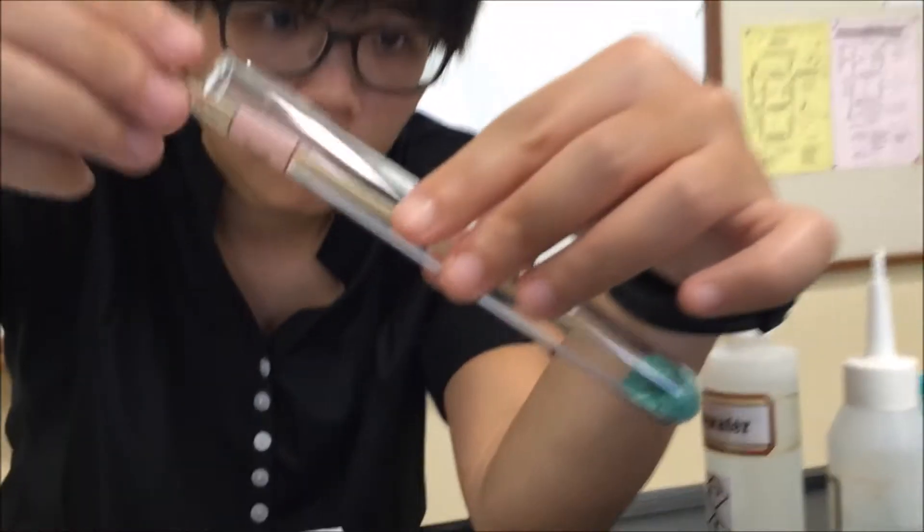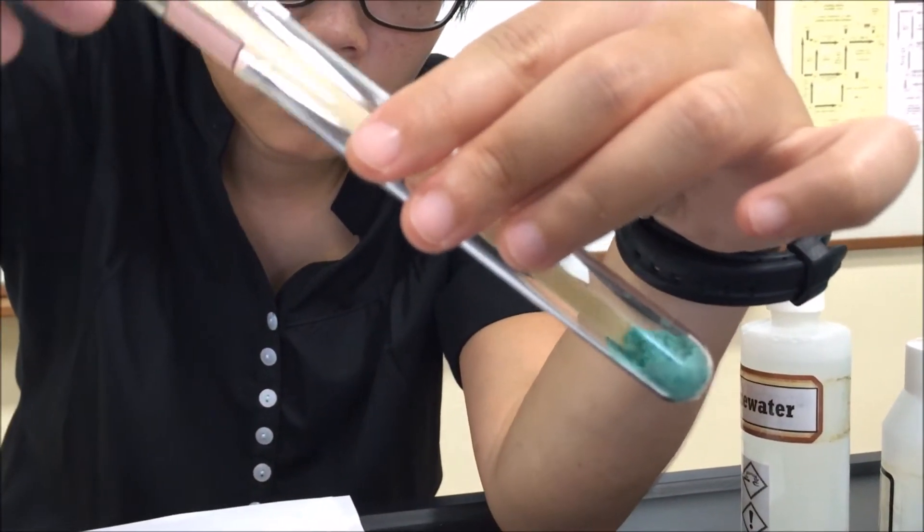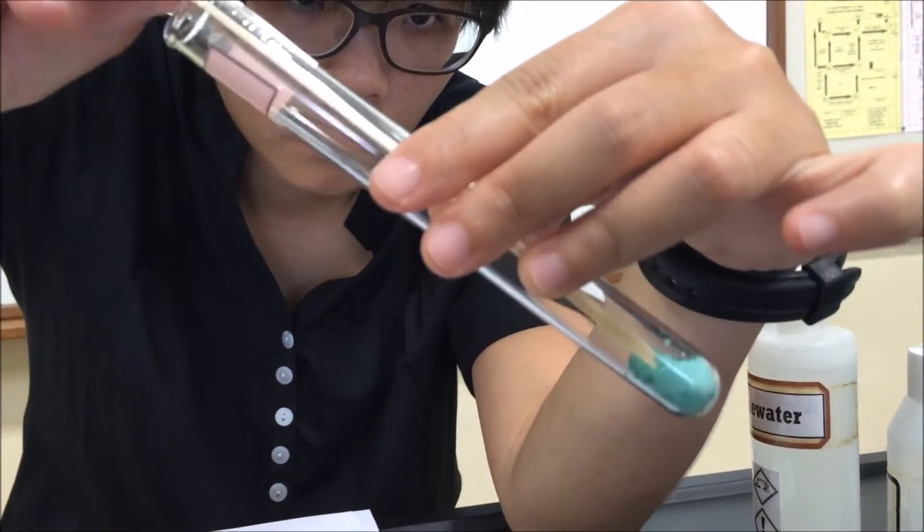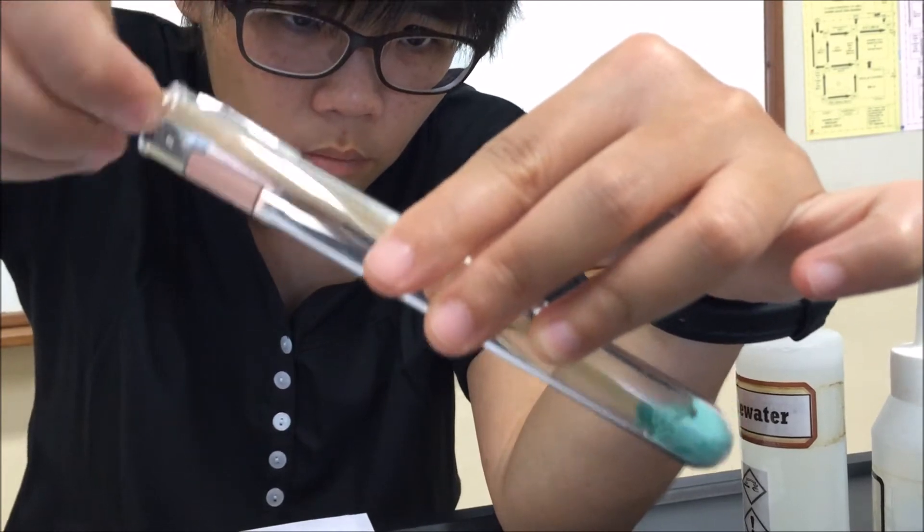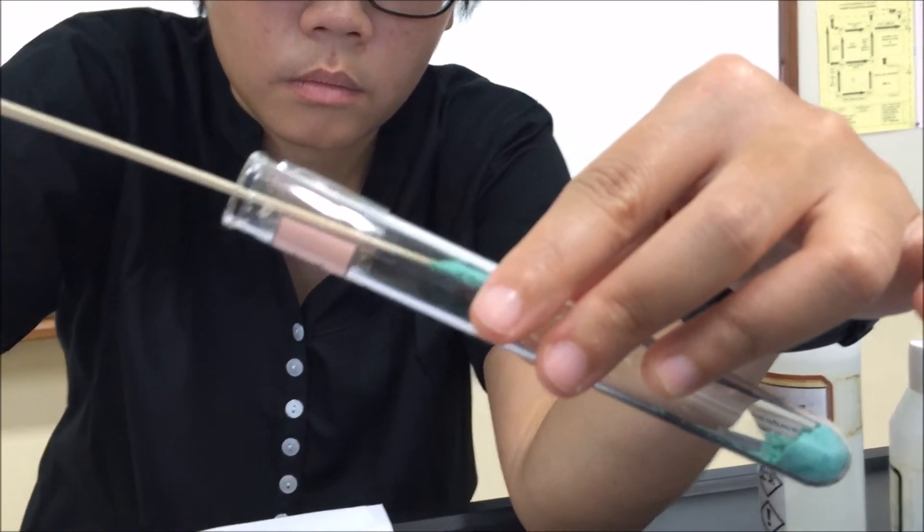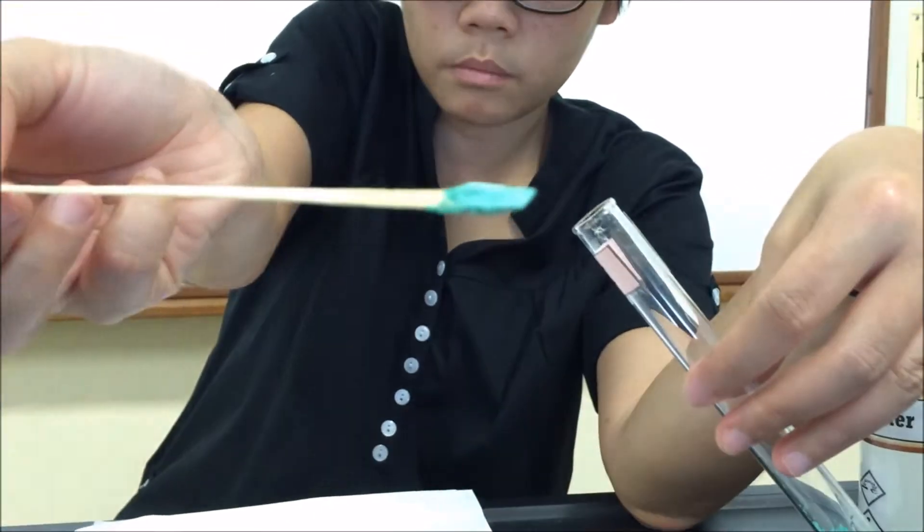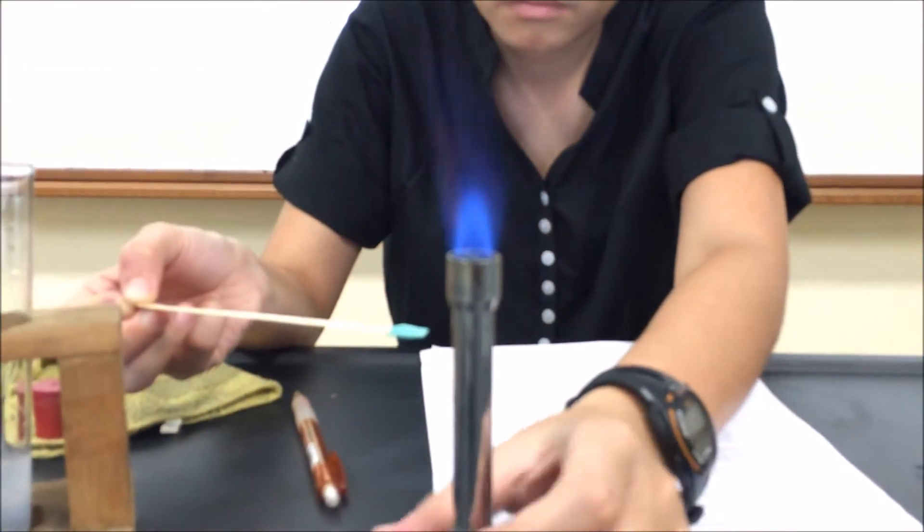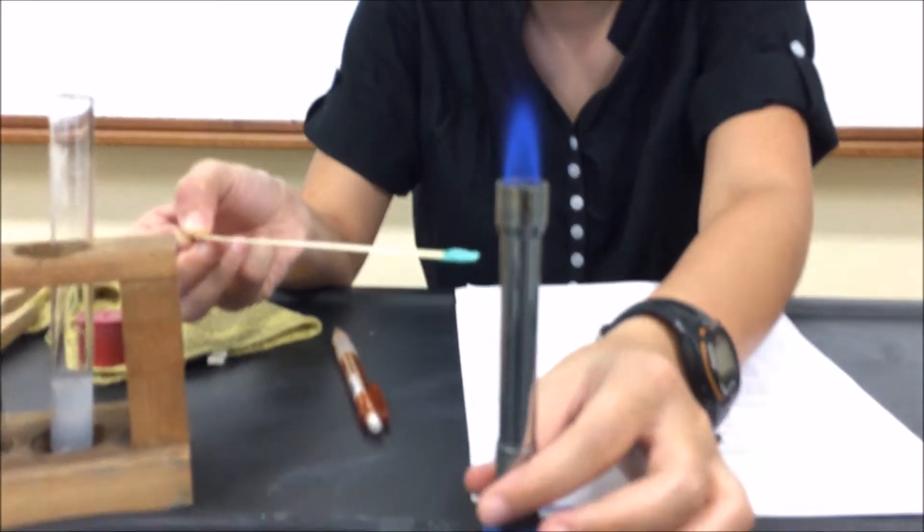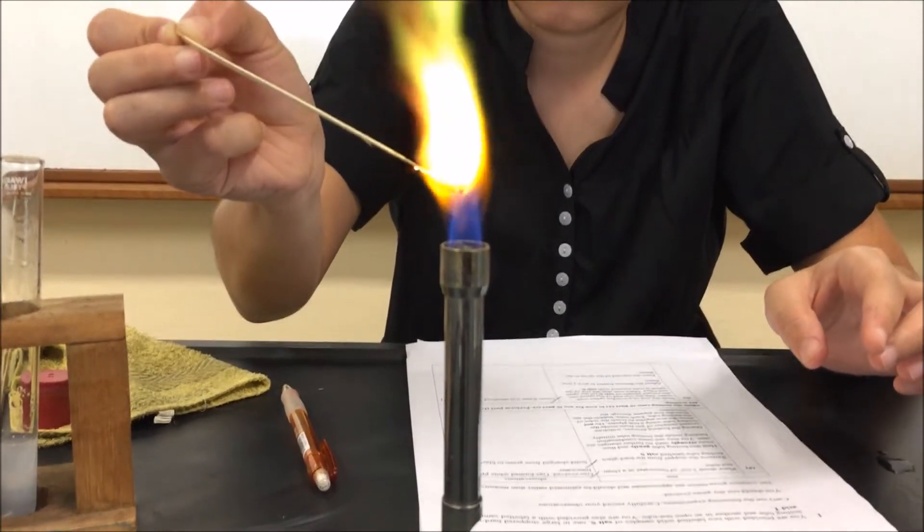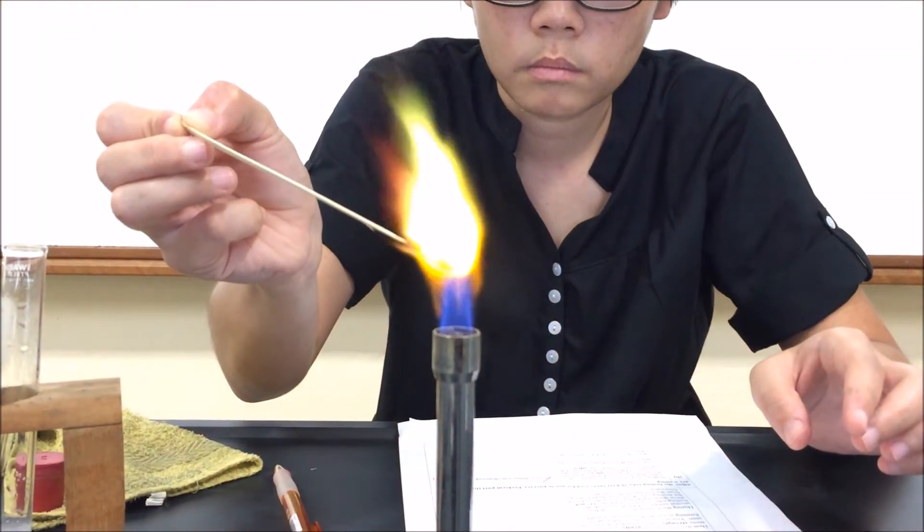And then to carry out the flame test correctly, always open the air hole to get a non-luminous flame, the blue flame, and put the splint at the top of the small blue triangle, the hottest part of the flame. So you put it in for about 1-2 seconds. And then you will see the color. So in this case, we get a green color. You can repeat a few times just to confirm.